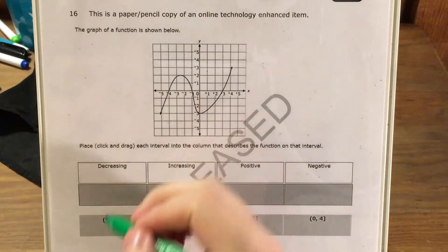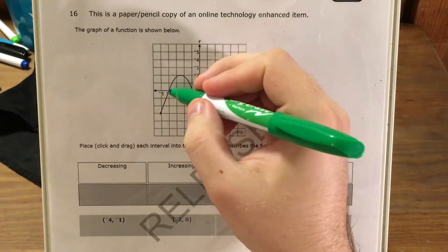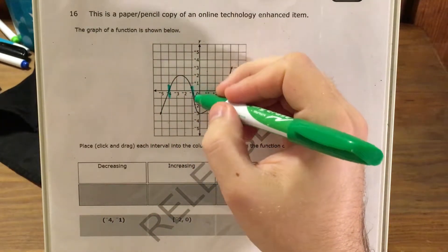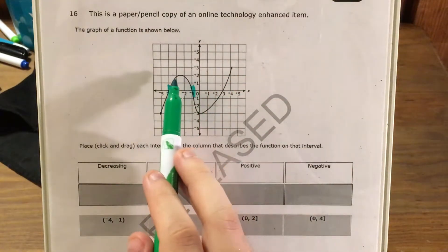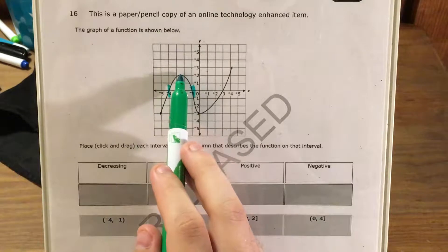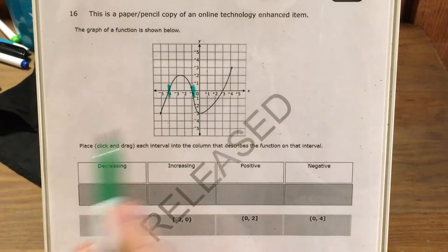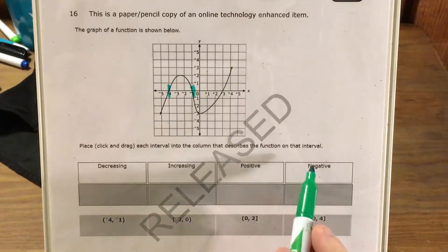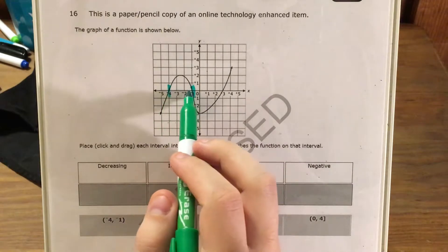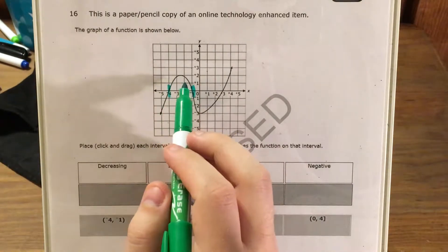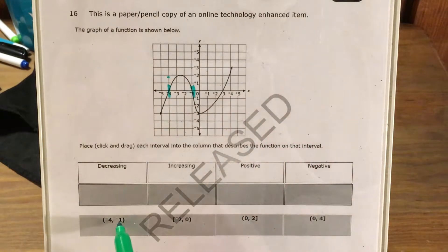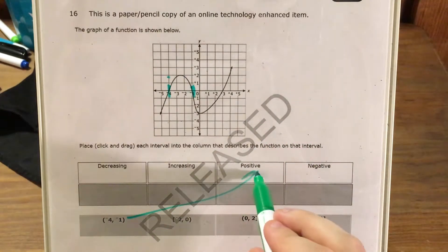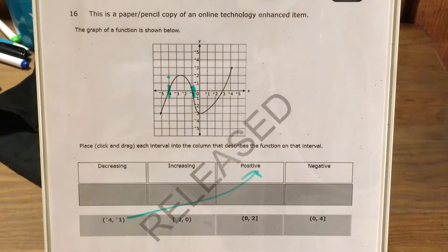So for instance, from negative 4 to negative 1, that's from here to here. We can't really say it's decreasing or increasing because it's actually increasing up until about this point and then decreasing. So we would have to say it's either positive or negative. Since between negative 4 and negative 1, all of our values are above the x-axis, I would say that negative 4, negative 1 represents an interval where the function is positive.